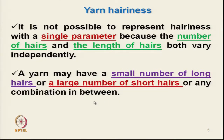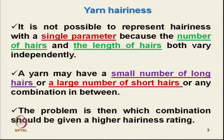A yarn may have a small number of long hairs, or a large number of short hairs, or any combination of these. Depending on the type of hairs, one can select a method — but the problem is which combination should be given a higher hairiness rating. Both these techniques have their positive and negative points.